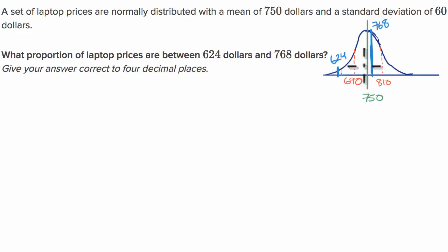What proportion are between these two values? We want to find essentially the area under this distribution between these two values. The way we're going to approach it, we're going to figure out the z-score for 768 - it's going to be positive because it's above the mean. Then we're going to use a z-table to figure out what proportion is below 768, so essentially this entire area, even the stuff below 624.